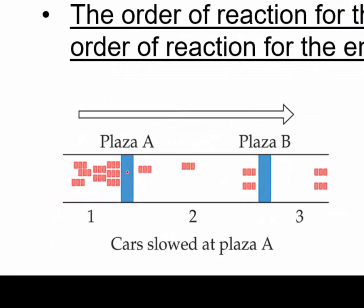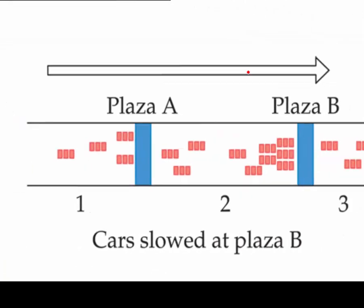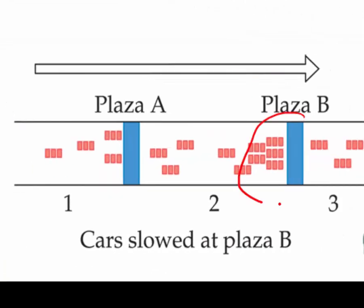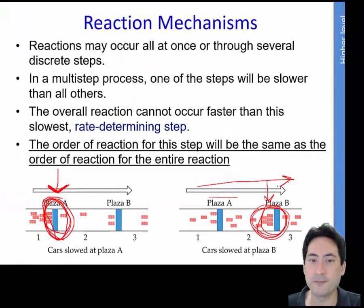So here's an example here. If you have plaza A that's slowing down the cars, or the people, or whatever this is, it must be people, that's going to be the rate determining step. So the whole speed of this entire reaction is determined by this first step. Similarly, if it happens to be plaza B that actually is the really slow reaction, then it doesn't matter how fast you are at A, the rate that occurs at B is going to determine the overall rate of reaction. So these are called the rate determining steps.